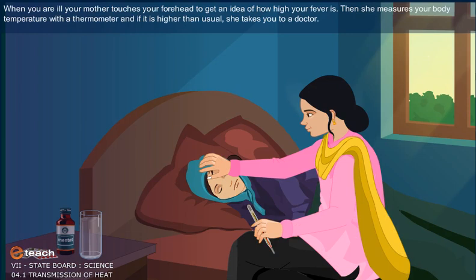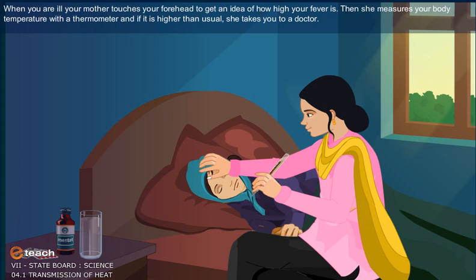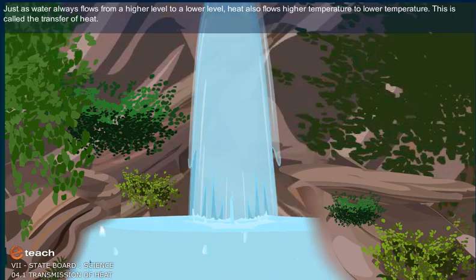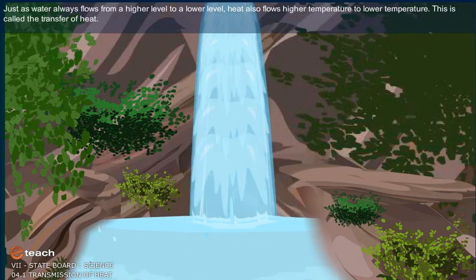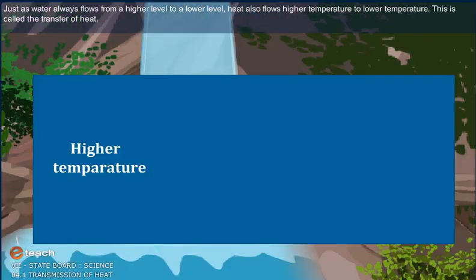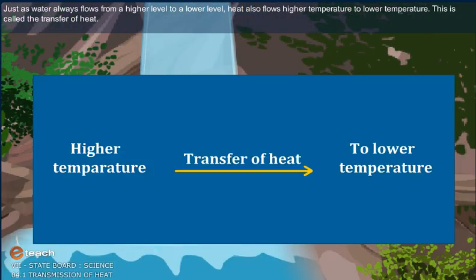When you are ill, your mother touches your forehead to get an idea of how high your fever is. Then she measures your body temperature with a thermometer and if it is higher than usual, she takes you to a doctor. Just as water always flows from higher level to a lower level, heat also flows from higher temperature to lower temperature. This is called the transfer of heat.